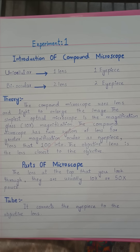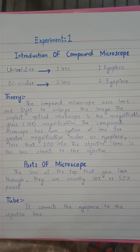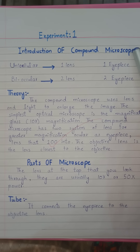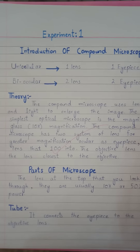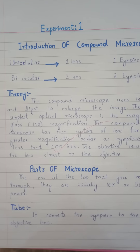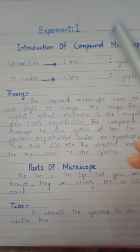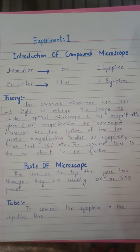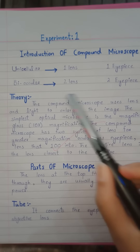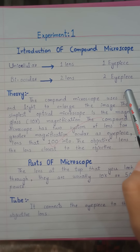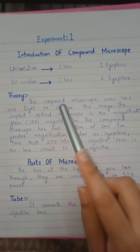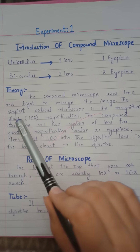Hello everyone, hopes all of you are fine and welcome to my channel. Today we will discuss about the compound microscope. The compound microscope is of two types: first is uniocular and then is biocular. Uniocular consists of one lens and has one eyepiece. Biocular consists of two lenses and has two eyepieces.